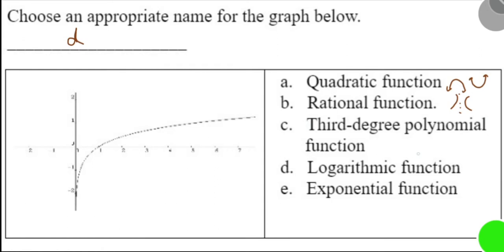Third-degree polynomials have three directions. One, two, three like this. Starting from negative infinity to positive infinity.